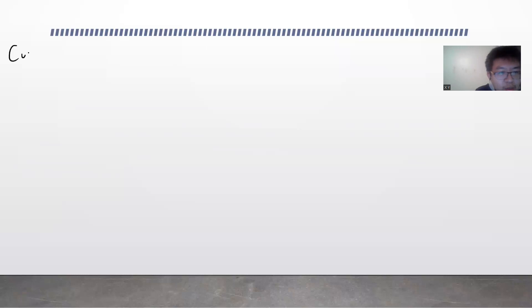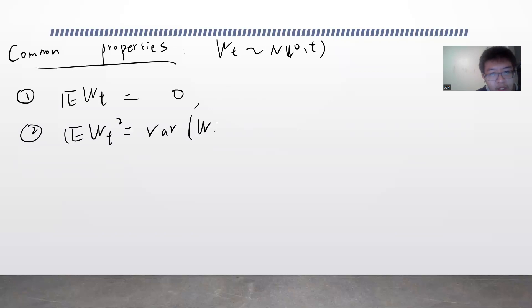So just the common properties. Now, these are so common that you should remember. So Wt is N(0,t). First one, trivial that the expectation of Wt is 0. And by definition, the expectation of Wt squared is basically the variance of Wt, which is basically t, by definition.